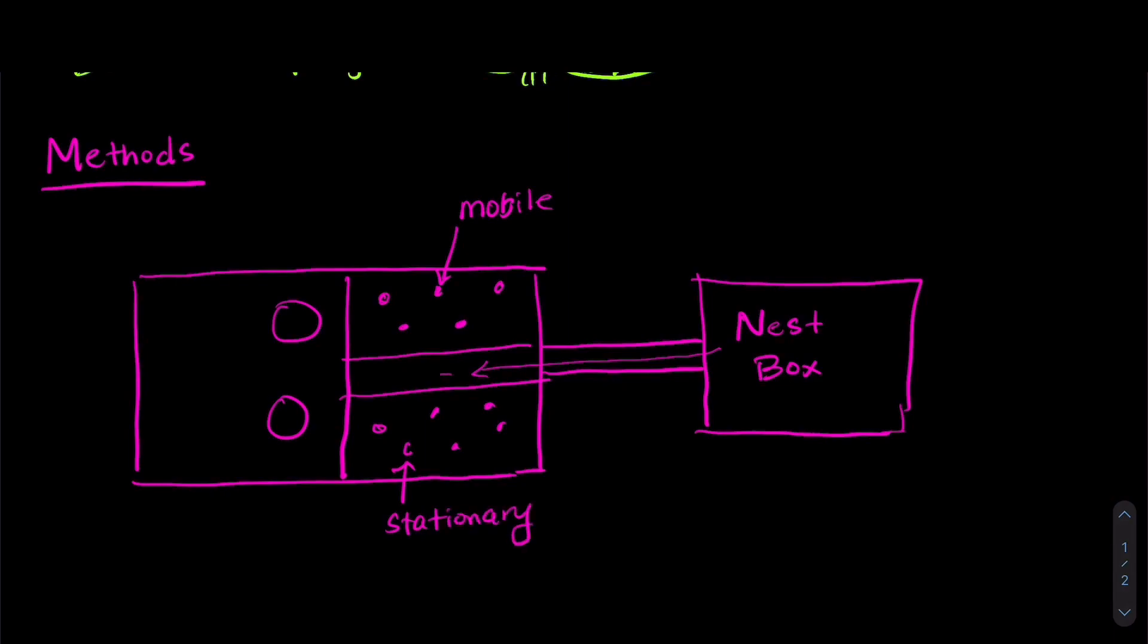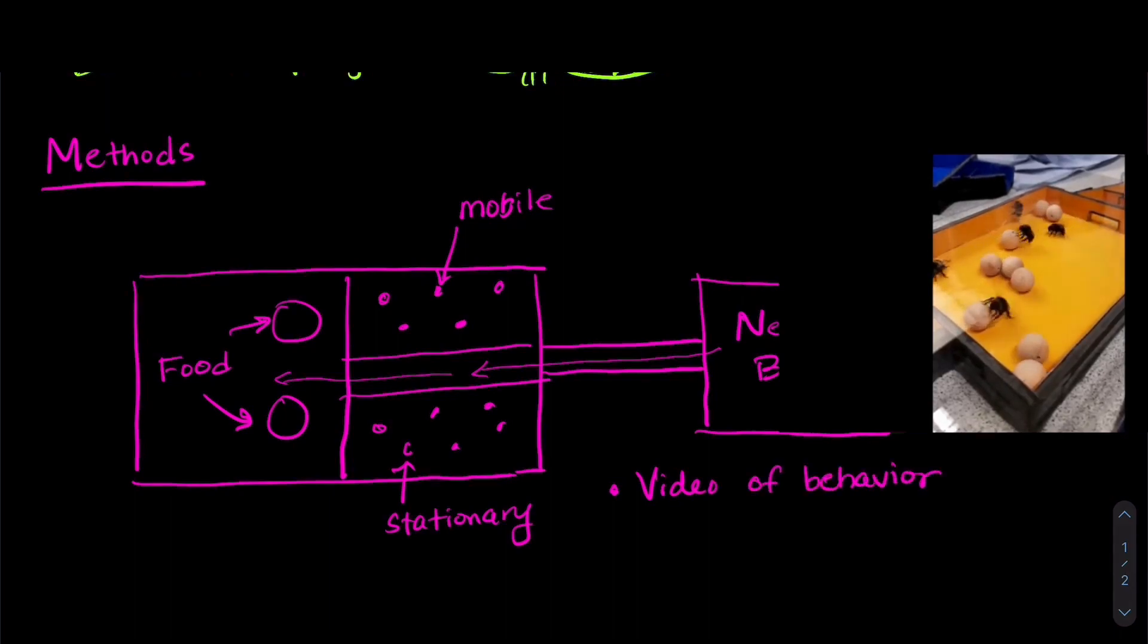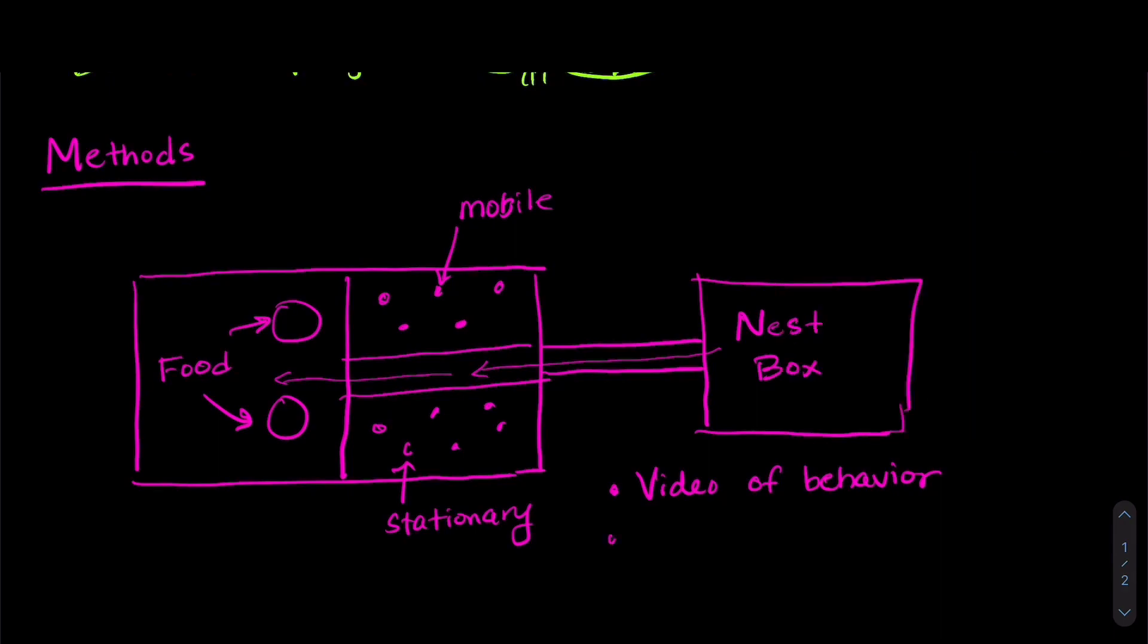And then if the bees kept going, they found themselves in an arena that had food, so sucrose and pollen. And what the researchers did was they looked at video of bee behavior over 18 days and they tried to make this experience as low stress as possible.